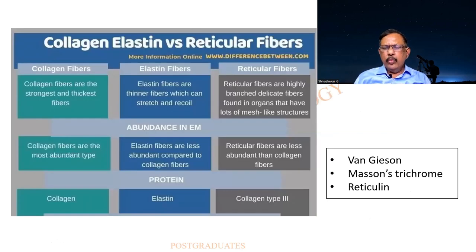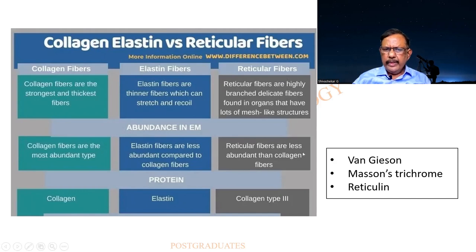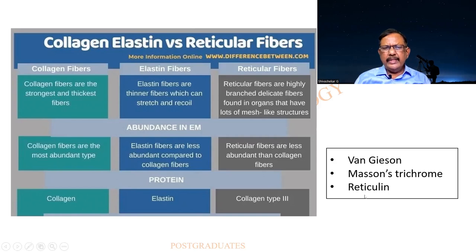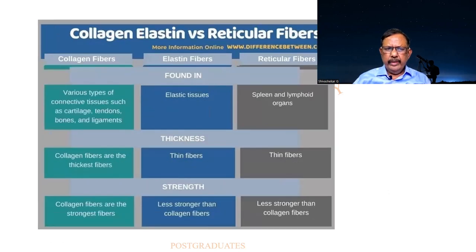This is given only for the sake of completion and comparison, not to be memorized exhaustively. The reference is also given. So what are the fibers? What is collagen? What is elastin? What is reticular fiber? What are the natures of these? I am dealing with the reticulin stain, which is a special stain for reticular fibers. There are other stains such as Van Gieson and the Masson's trichrome, which is routinely used — we shall come to them at a later date.